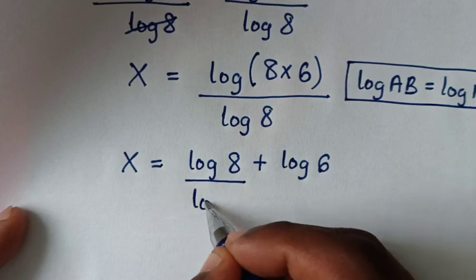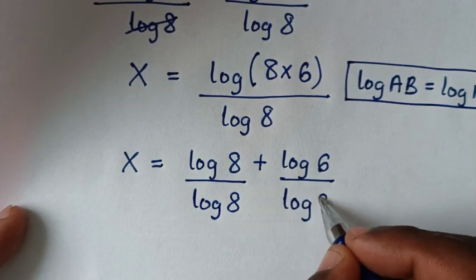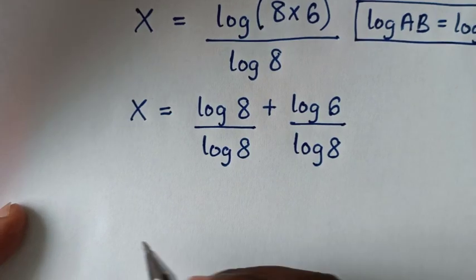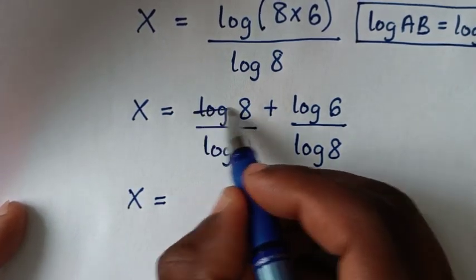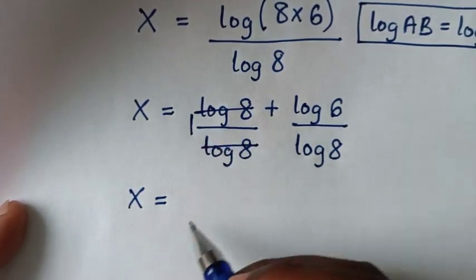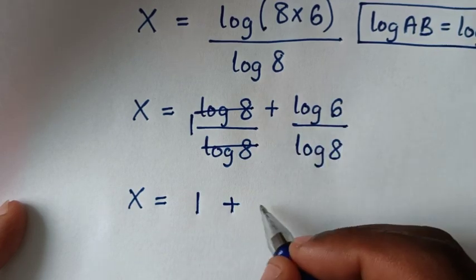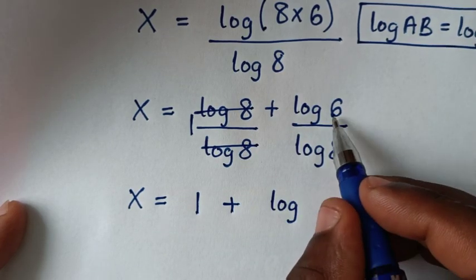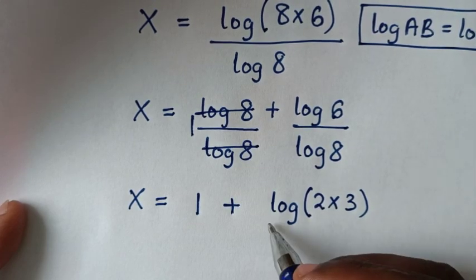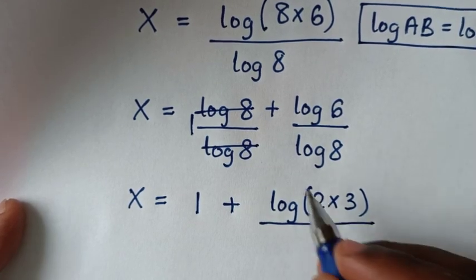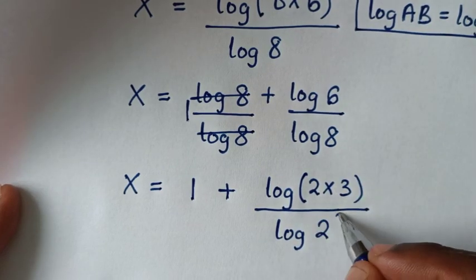We split the fraction: log of 8 over log of 8 plus log of 6 over log of 8. Log of 8 divided by log of 8 is 1, so we have 1 plus log of 6 over log of 8. Now 6 is 2 times 3, and 8 is 2 to the power 3.